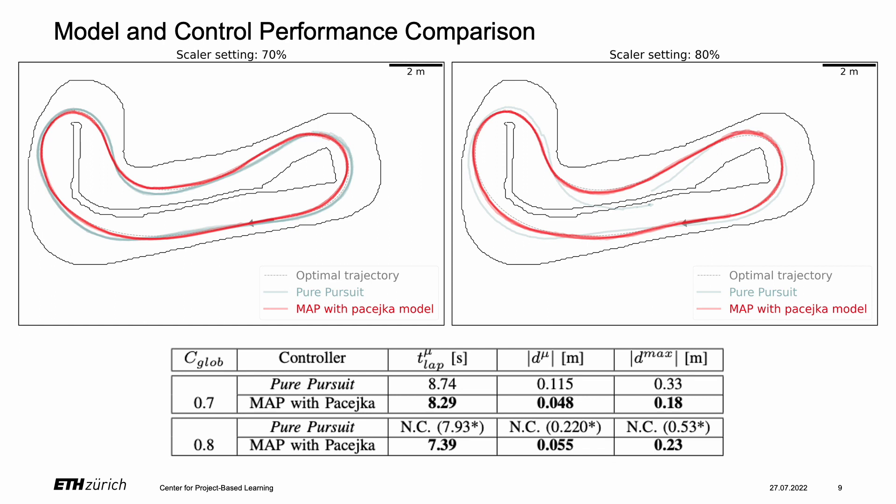Both controllers were evaluated on the same track at different speeds. In both tests, the MAP controller achieved faster lap times and outperformed the baseline in terms of average and maximum lateral deviation from the trajectory, with improvements of up to 75% at higher speeds.